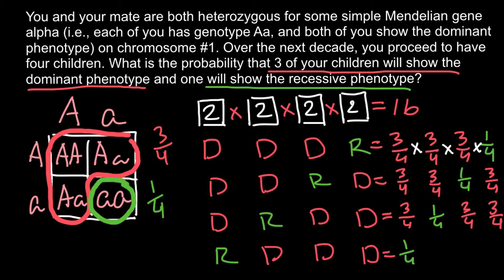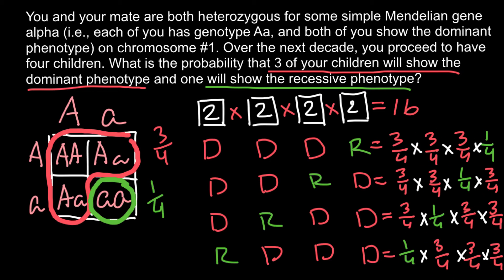And the last arrangement — R, D, D, D — equals 1/4 × 3/4 × 3/4 × 3/4. You can see the order of events differs between arrangements, but we get the same probability for each. Each one equals 3 × 3 × 3 × 1 over 4 × 4 × 4 × 4, which is 27 over 256. So each of the 4 favorable arrangements has a probability of 27/256.